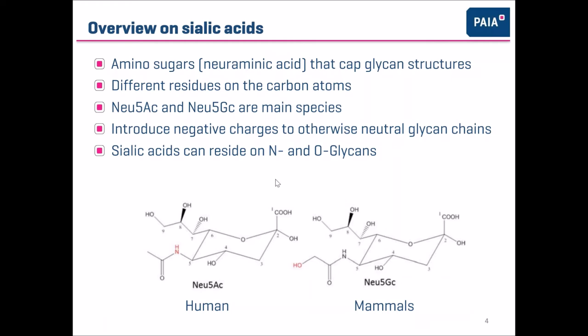The main species found on glycoproteins are two: either with the acetyl group on the amino function, or the glycolyl group. These glycans are a little bit special because they introduce negative charges to glycan chains that are otherwise neutral. Sialic acids can reside either on so-called N-glycans or on O-glycans, and as you will see on the next slide, these N- and O-glycans can be quite different.